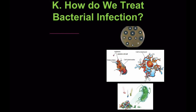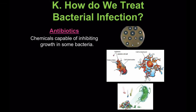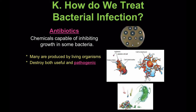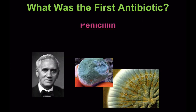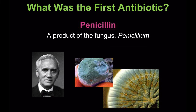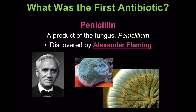So how do we treat bacterial infections? Antibiotics are chemicals capable of inhibiting growth in some bacteria. Many are produced by living organisms. They destroy both useful and pathogenic, meaning disease-causing, bacteria. They work by weakening the cell walls — when that happens, water rushes in and causes cytolysis, which means rupture of the cell. Bacteria that survive can become resistant to antibiotics. The first antibiotic was penicillin, a product of the fungus Penicillium, and was discovered by Alexander Fleming.